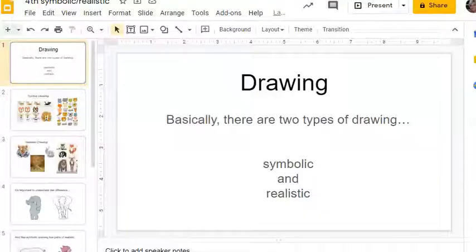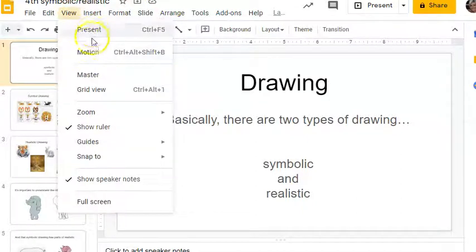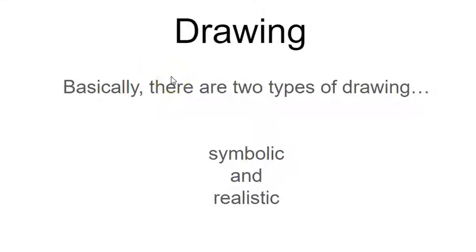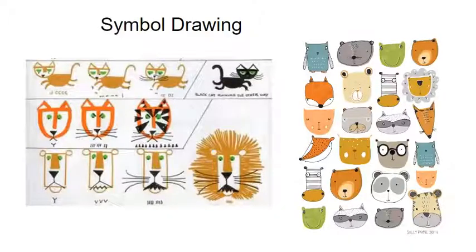Hi guys, we are drawing today. We've talked about this before but I'm going to go over it again. We are going to talk about symbolic and realistic drawing, and we are going to do realistic drawing this year. Drawing basically has two types — symbolic and realistic. Symbolic drawing uses symbols and simple shapes to represent something in real life, for example a cat, a tiger, a lion, or other various animals.